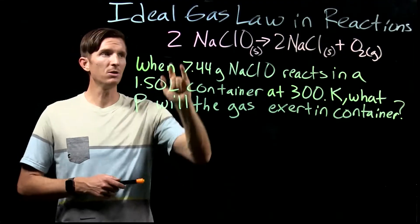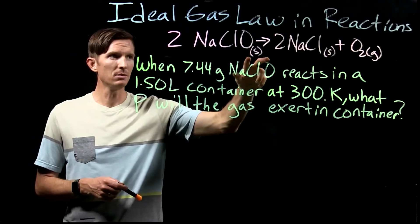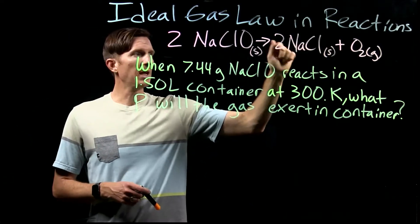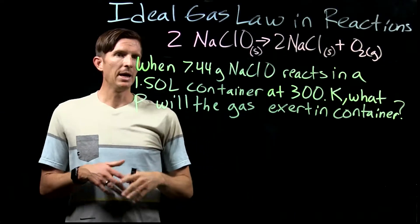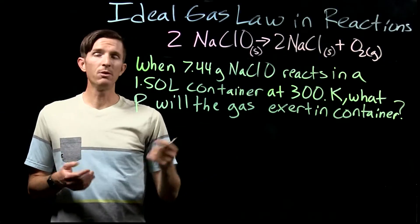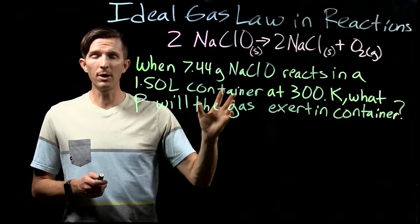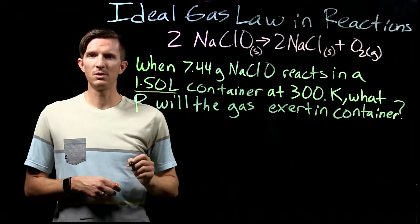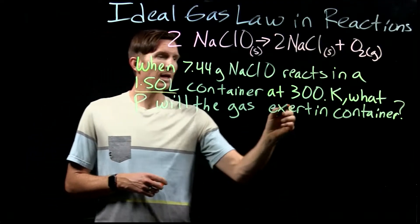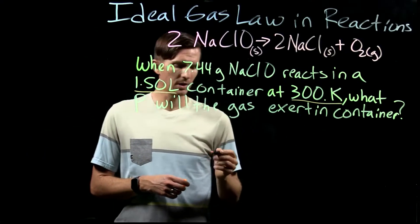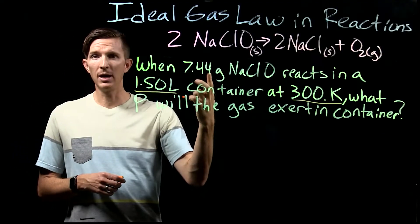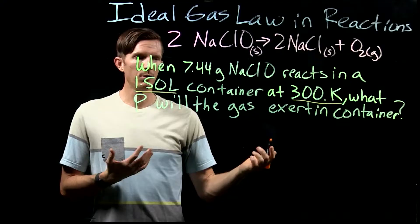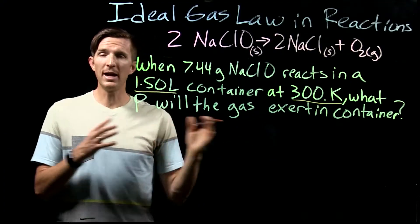We have this reaction: sodium hypochlorite, a solid, producing sodium chloride and oxygen gas. We're told we have 7.44 grams of sodium hypochlorite reacting in a 1.50 liter container at 300 Kelvin. So we know the temperature and the volume of our container. The question is: what pressure will the gas exert when the reaction is done?